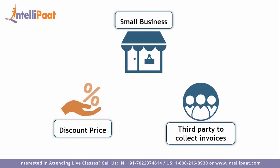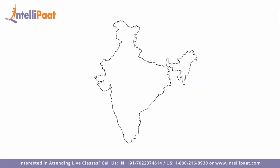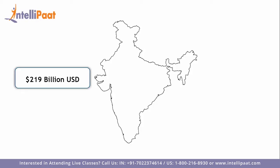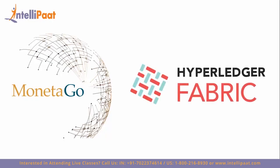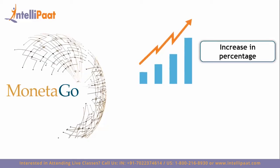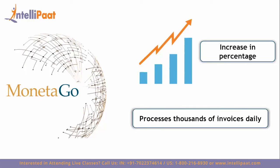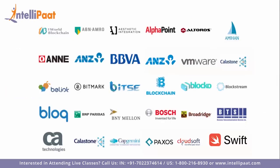Many small business owners would like to sell invoices at a discounted rate, but many firms were too small for banks to work with. For example, factoring in India delivers a reported $219 billion to the country's micro, small, and medium enterprises, but leaves another $188 billion on the table as unmet demand. Monetago selected Hyperledger Fabric as its blockchain platform, developed business logic and hashing to prevent fraud, and went live. In just three months, the network was already processing thousands of invoices daily with no duplicate financing.